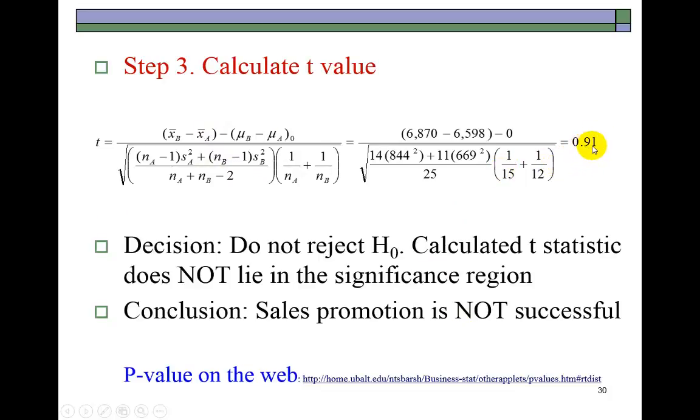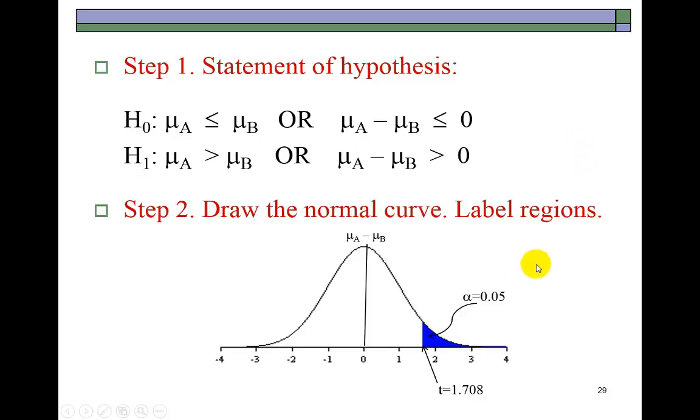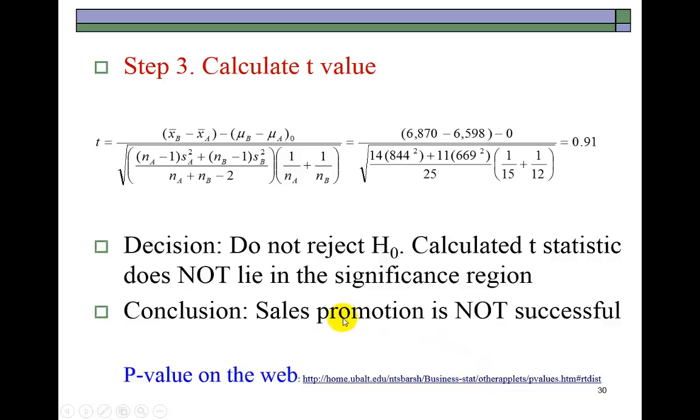We know that we will not reject the null hypothesis because this is definitely going to be less than the critical value, which is 1.71 approximately. We conclude that the sales promotion was not successful, sadly.